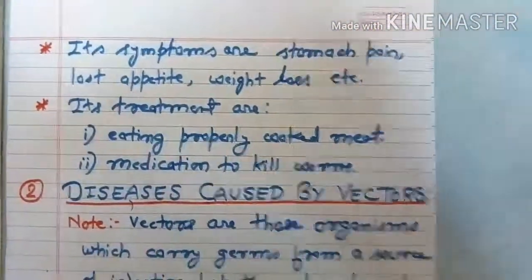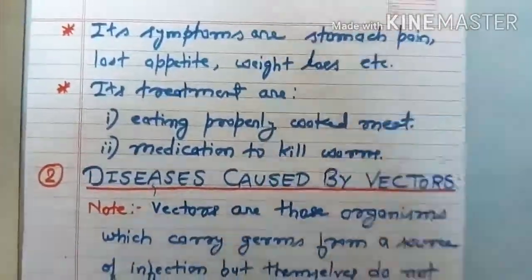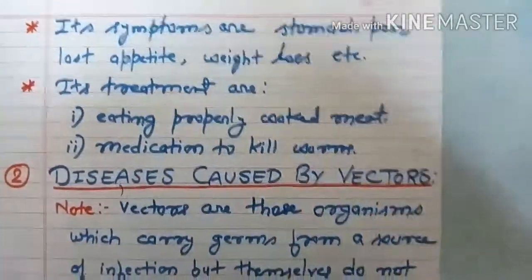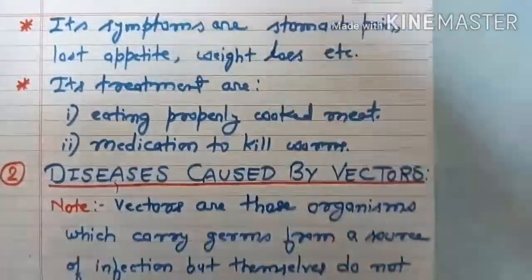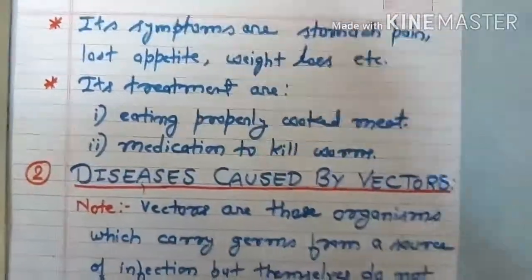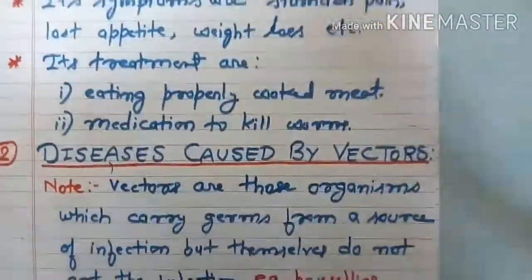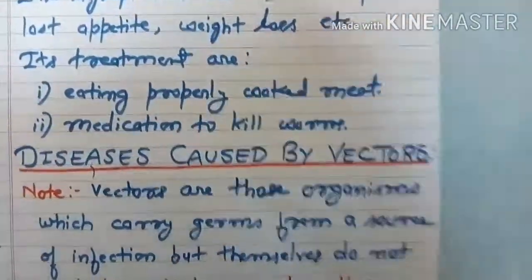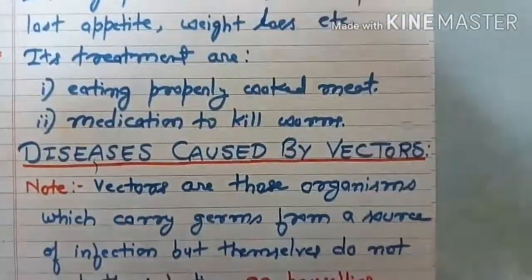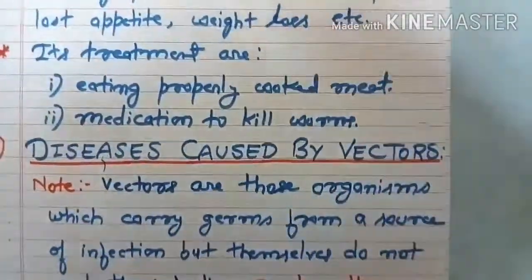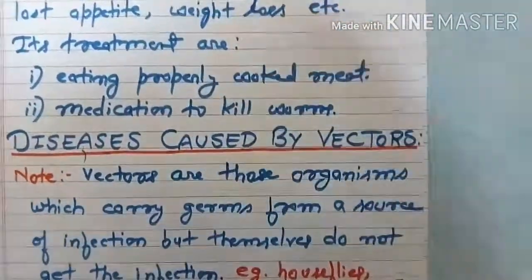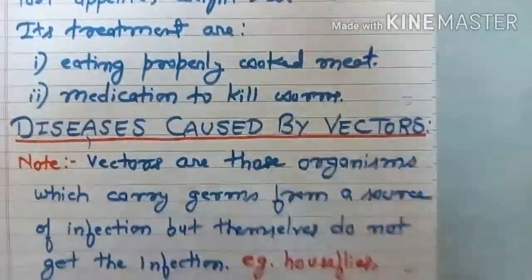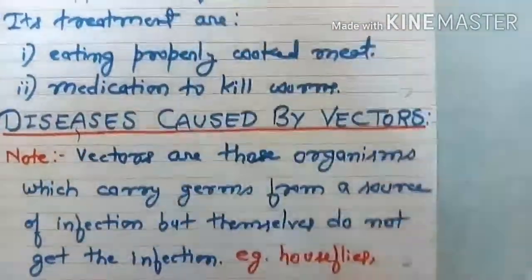The symptoms of taeniasis are stomach pain, loss of appetite, weight loss, etc. Our digestion will not be strong and weight loss occurs day by day. Its treatment includes eating properly cooked meat and taking medication to kill worms.